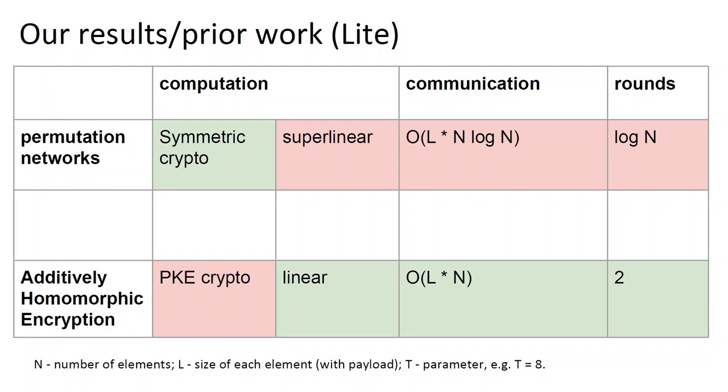However, this approach has its own downsides. Logarithmic number of rounds and communication cost, which is proportional to n log n times the size of each element in the database. Intuitively, this is because shuffling networks consist of n log n swaps, and parties have to feed the full element together with its payload into each swap, hence the complexity.